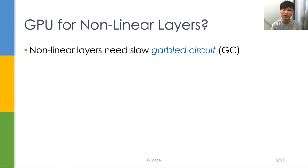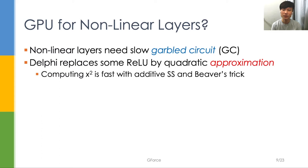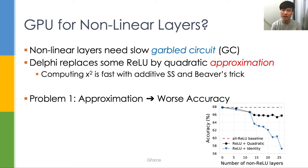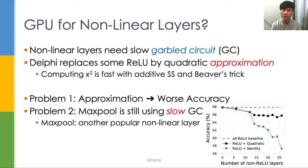Delphi couldn't utilize GPU for nonlinear layers and still sticks to the slow garbled circuits (GC) for many nonlinear operations. For better performance, Delphi approximates some ReLU with squaring, which can be computed much faster. However, the first problem is that approximation harms accuracy. In CIFAR-100, the approximation reduces the accuracy by two percentage points.